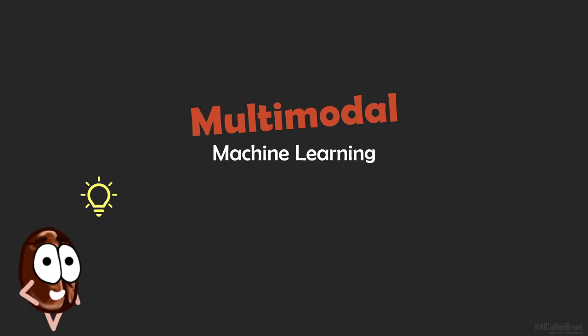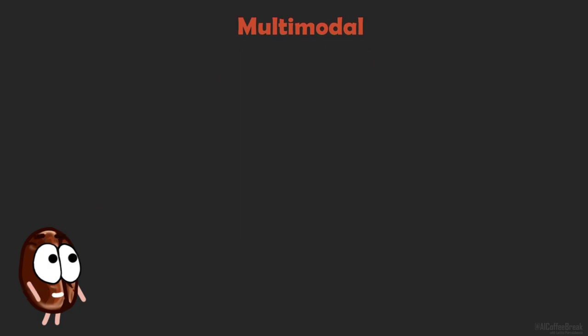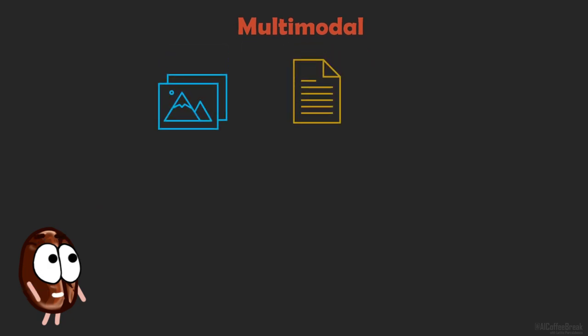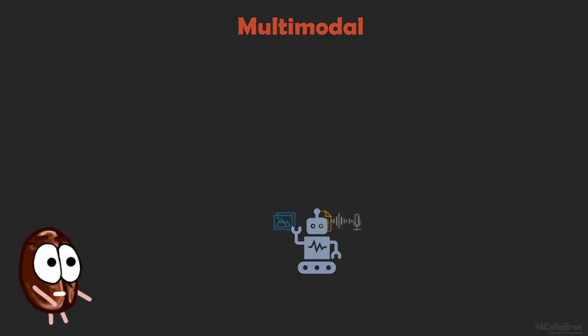But first, without the rigour of definitions. What is multimodal machine learning, or short, multimodality? We speak of multimodal learning when we have very different input types like, for example, images, text or speech. These are called modalities and are processed by the same machine learning model.